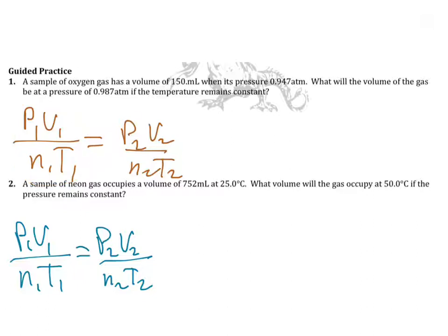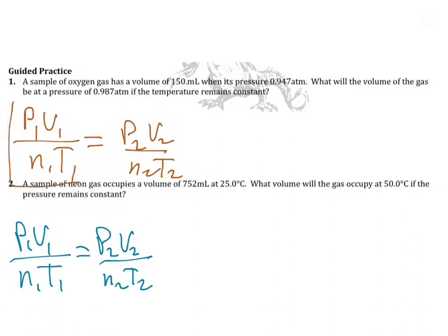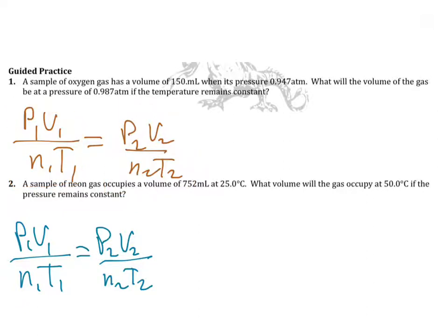On the other side we have our new pressure, new volume, new moles, and new temperature — this is the final condition. We can use the combined gas law to calculate a variable if there's a change in another variable.